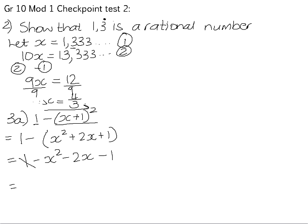And if we collect the like terms together, 1 subtract 1 is 0. So the final answer is negative x squared minus 2x.